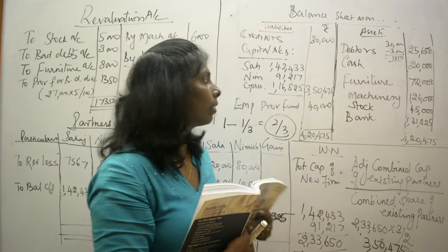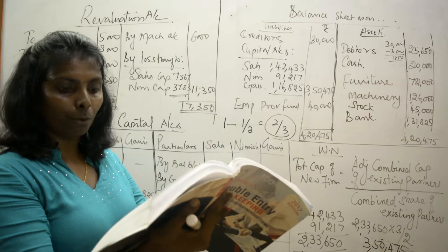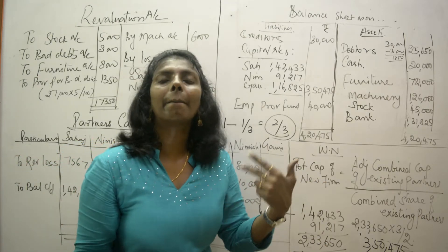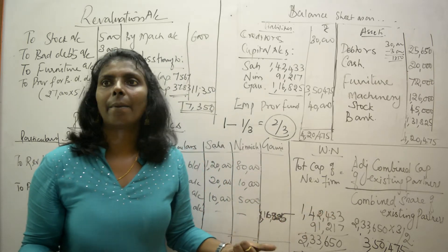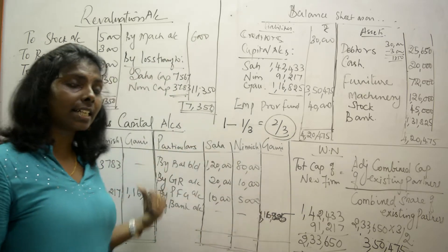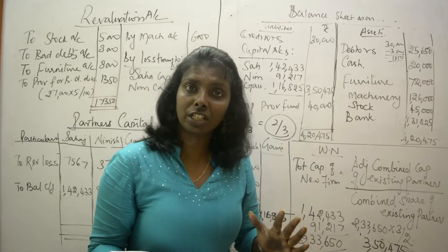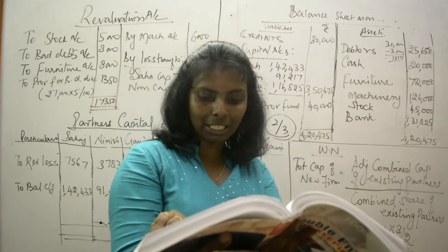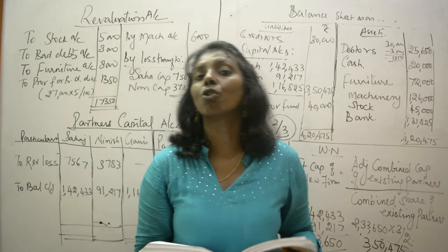The balance sheet tallies. To summarize the difference: in Case 1, the incoming partner's capital is given and you adjust existing partners' capital based on it. In Case 2, the incoming partner's capital is missing and you calculate it based on the existing partners' capital. That is the only difference between Case 1 and Case 2 of the Adjustment of Capital Method. Go through this problem and if you have any doubts, get back to me. Thank you.